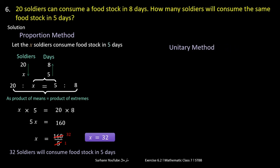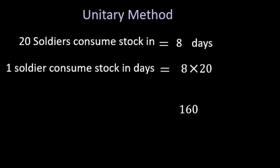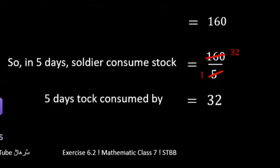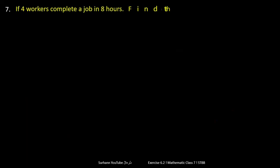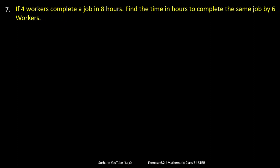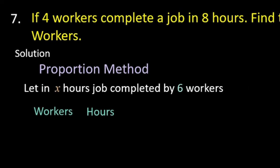The same problem by unitary method is straightforward — you can do it by yourself. Next question: 4 workers complete a job in 8 hours. Find the time to complete the same job with 6 workers. By proportion method: suppose 6 workers complete the job in x hours. We write workers and hours: 4 workers complete job in 8 hours; 6 workers complete in x hours.